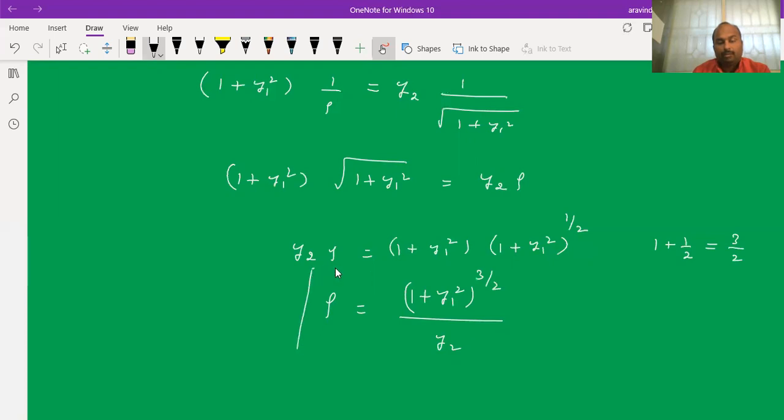This is the expression for radius of curvature in Cartesian form. Finding radius of curvature in Cartesian form means you have to find y1 and y2 and substitute in this formula to get the radius of curvature of the required curve. Thank you.